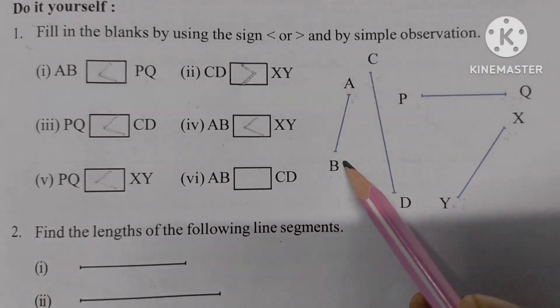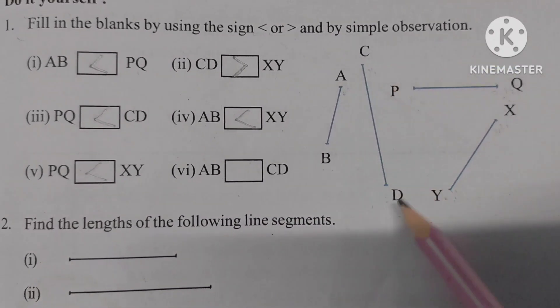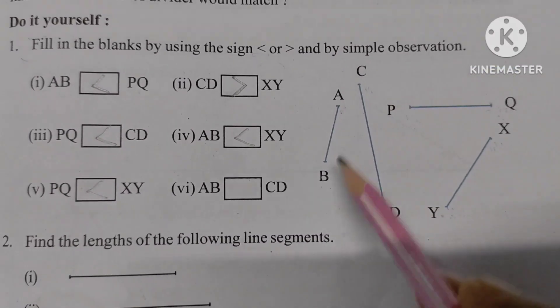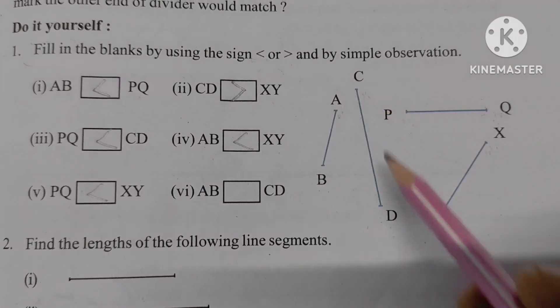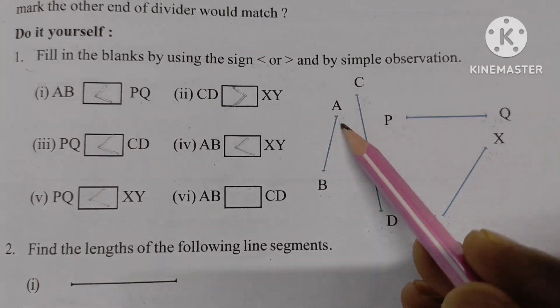This line segment is AB and this one is CD. AB is smaller than CD.